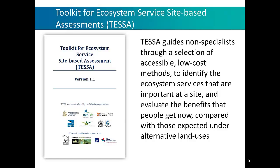The toolkit itself at the moment is a downloadable document. It guides non-specialists through a selection of accessible and low-cost methods so that people can identify important ecosystem services at a site, evaluate the benefits that people get now, and compare those to the site under an alternative land use.